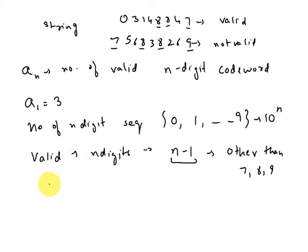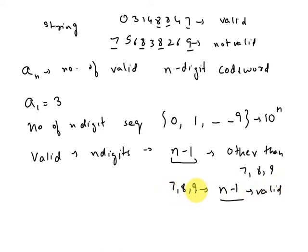Alternatively, a valid string of n digits can be obtained by appending 7, 8, or 9 to a sequence of n minus one digits that is not valid. If the (n-1)-digit code is invalid, it contains an even number of digits ≥ 7, so adding one such digit makes the count odd, producing a valid n-digit code word.